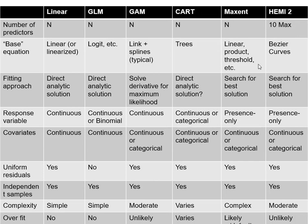MaxEnt uses many different combinations of curve types, making it much more likely to overfit — but there's a parameter to control that overfitting, and I'll show you how. HeMi and GAMs are unlikely to overfit; GLM and linear regression are too simple to overfit, so you're safe with those. This maps to the overall complexity of these methods.